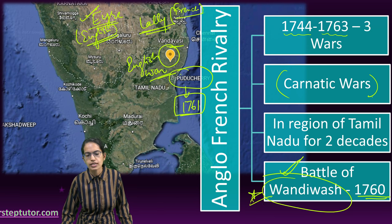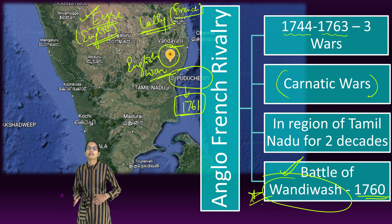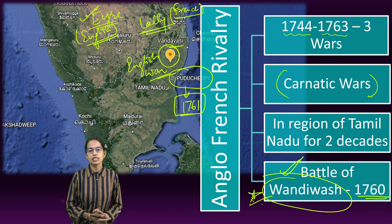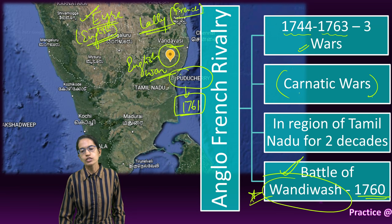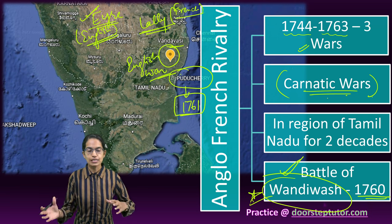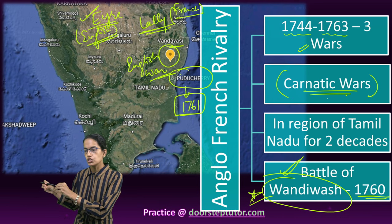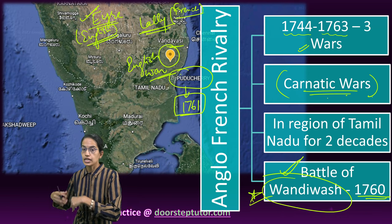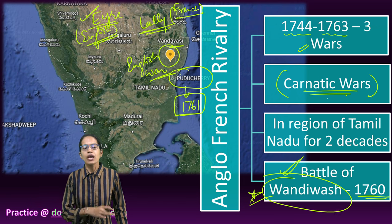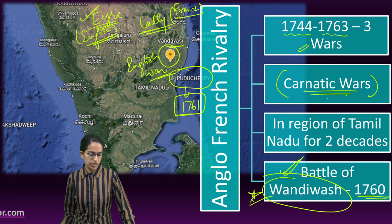Extremely important — the Anglo-French rivalry. The battle was known as the Battle of Wandiwash in 1760 and the three important wars, the Carnatic Wars, formed the basis for the collapse of the French in India, the French settlements and French colonies in India, and finally the start of British rule in India.